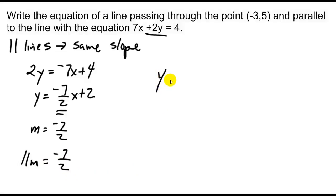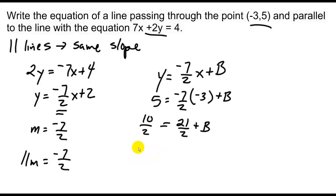And just like the last problem we now have y equals negative 7 halves x plus b. They give us a point of negative 3, 5 that this parallel line goes through. So I plug in 5 for y. And we'll take and plug in negative 3 for x. And once again solve for b. I've got 21 over 2 plus b equals 10 halves. Again getting the common denominator. Bring the 21 over so I have negative 11 over 2 is equal to b. And y equals that slope of negative 7 halves x minus 11 over 2.